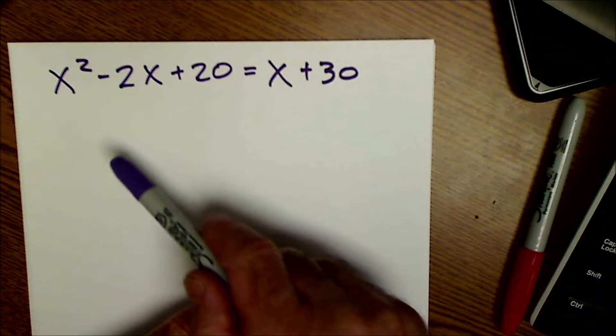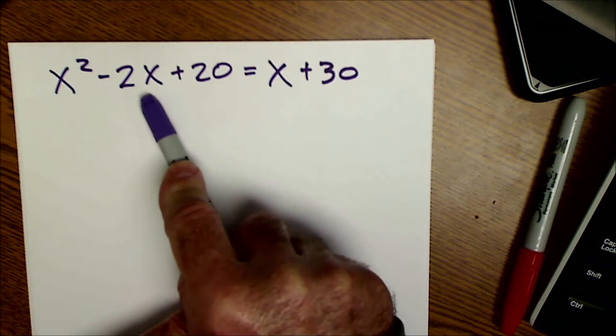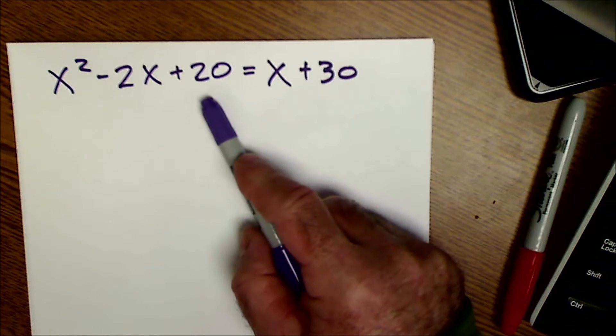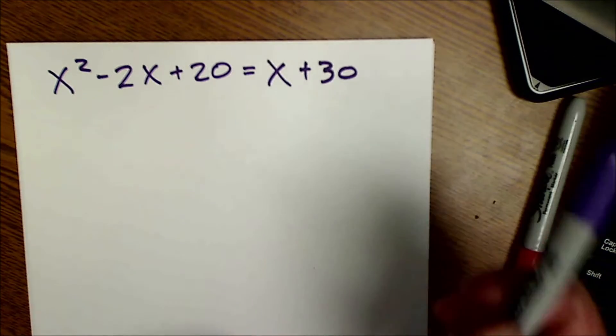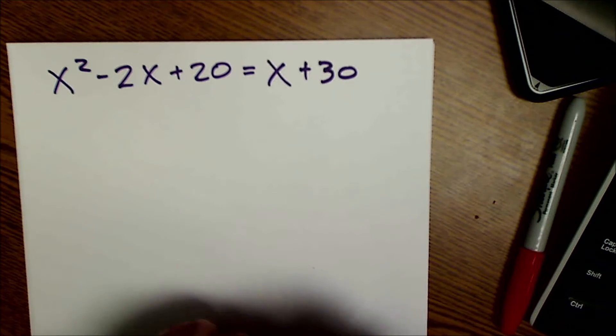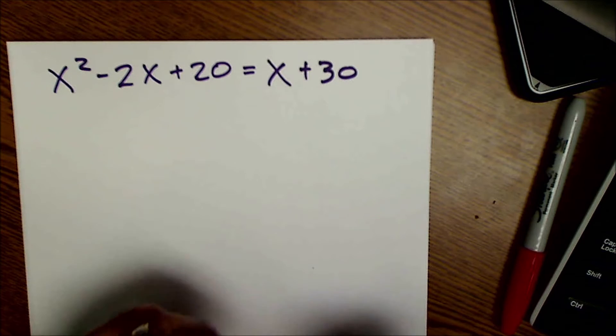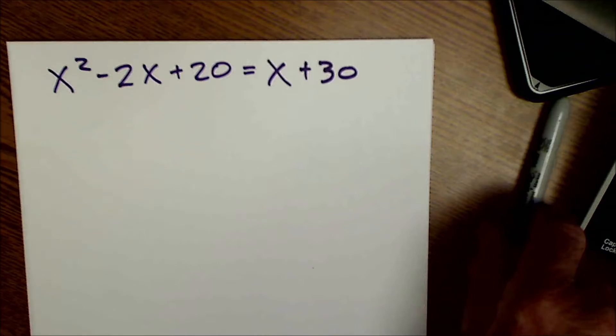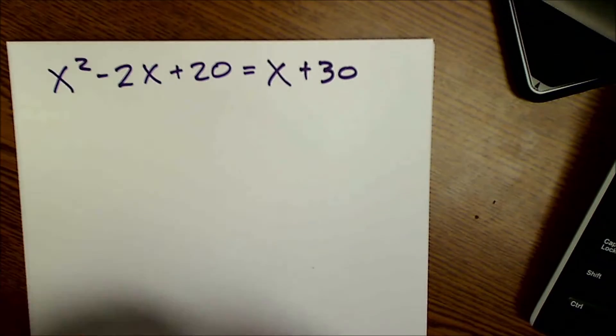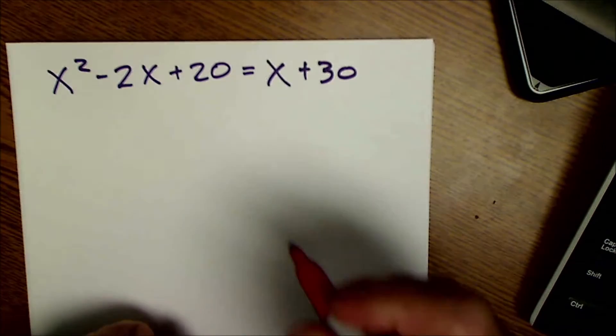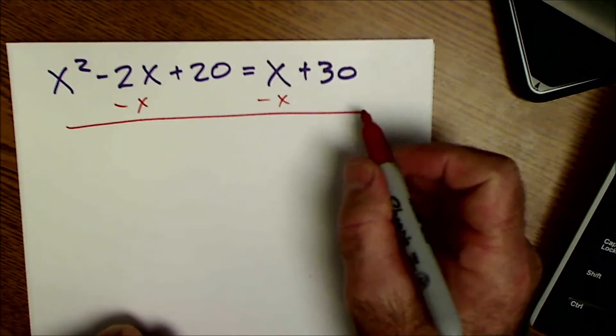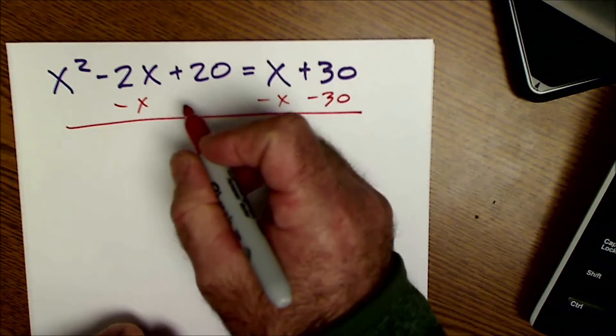So this is a quadratic. It's a quadratic because there's an x squared term, an x term, and a singular term. There are a lot of ways to solve quadratics. You could solve them by graphing, the quadratic formula, which we'll do on the spreadsheet, or by factoring. If you're going to do it by factoring, the first thing you want to do is get everything on one side and set it equal to zero. So I'm going to subtract x here and from here. I'm going to subtract 30 from both sides.